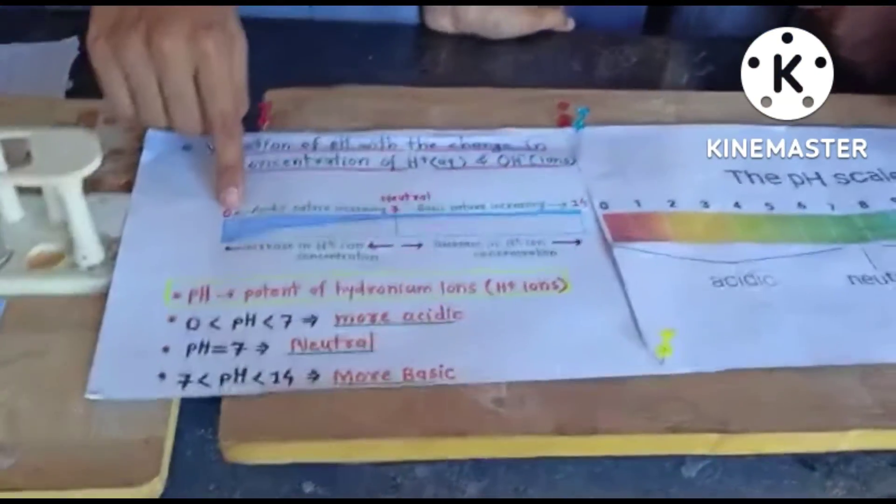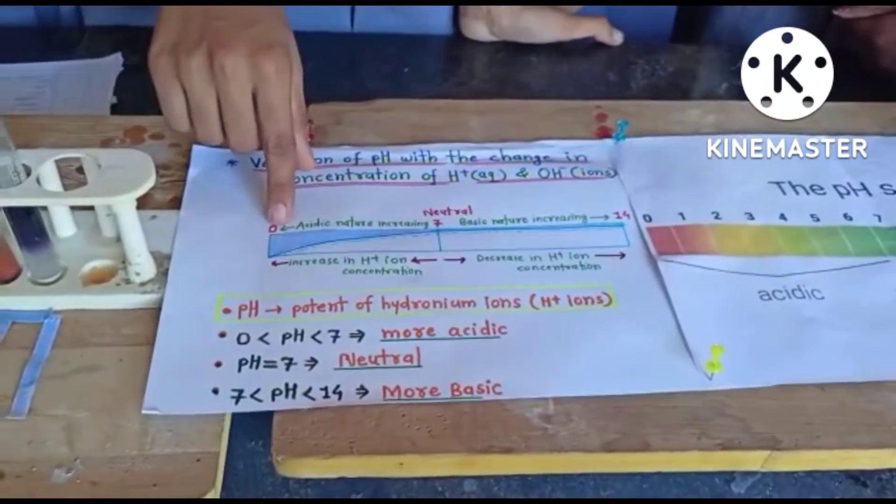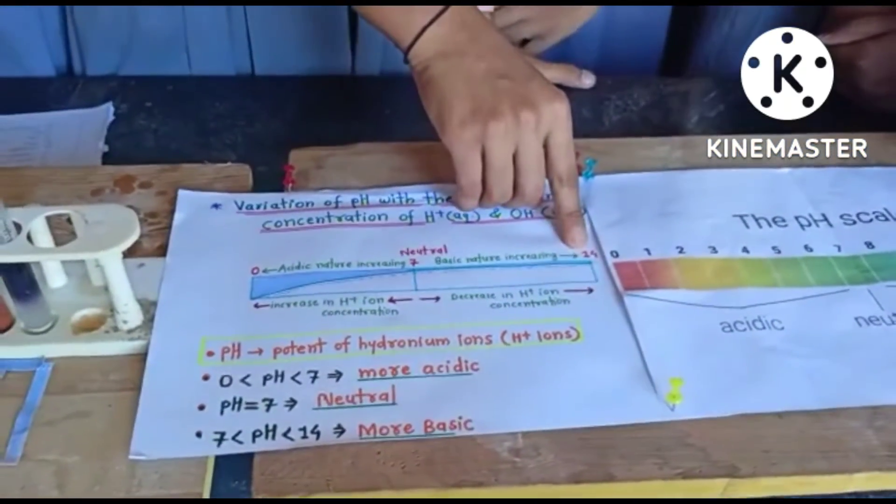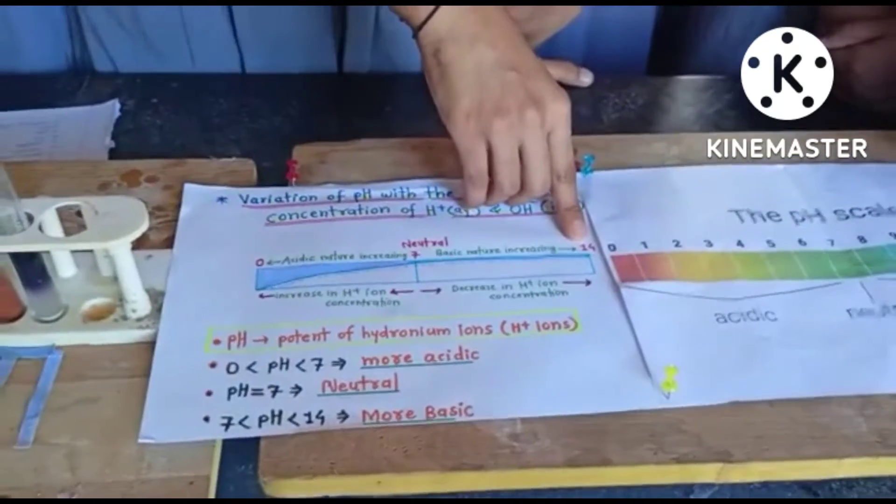When the pH of a solution is 1, it is most acidic. When the pH is 7, it is neutral. And when the pH of the solution is 14, it is the most basic solution.